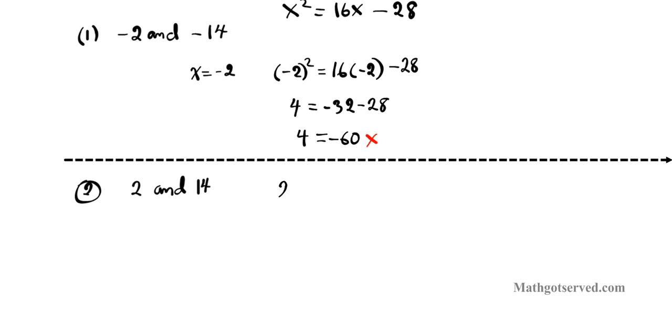So is 2 squared equals 16 times 2 minus 28? Is that true or false? 2 squared is 4. 4 equals 16 times 2 is 32 minus 28. 32 minus 28 is 4. Is 4 equal 4? Absolutely. So this checks.